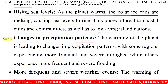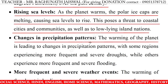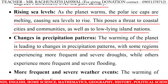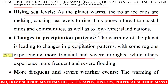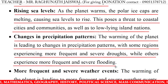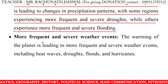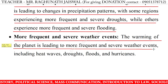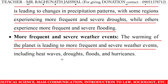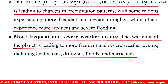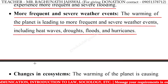Changes in precipitation patterns: the warming of the planet is leading to changes in precipitation patterns, with some regions experiencing more frequent and severe droughts while others experience more frequent and severe flooding. The warming is also leading to more frequent and severe weather events, including heat waves, droughts, floods, and hurricanes.